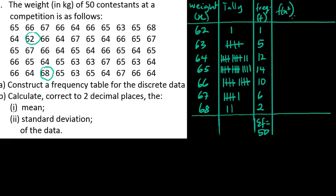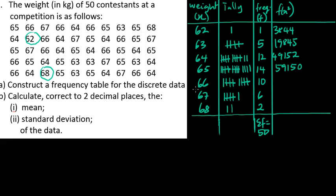The next thing we need is the fx² column, which we'll use in our standard deviation formula. Multiply frequency times x squared: 1×62²=3844, 5×63²=19845, 12×64²=49152, 14×65²=59150, 10×66²=43560, 6×67²=26934, and 2×68²=9248.